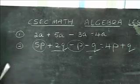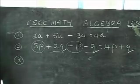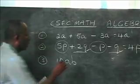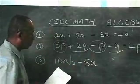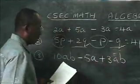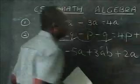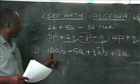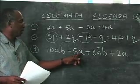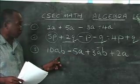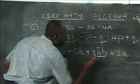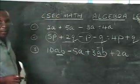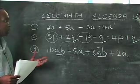Let's look at an expression where you have two letters involved. For example, 10ab minus 5a plus 3ab plus 2a. One of the things we need to note is that 10ab is really 10 times a times b, whereas here we just have 5a — this term and that term are not related, they are different. But we notice 10ab and 3ab are similar. In the same way, minus 5a and plus 2a are similar. So we need to combine terms that are similar.